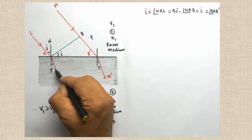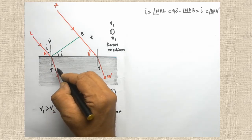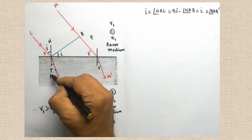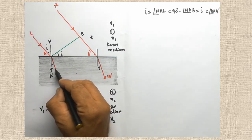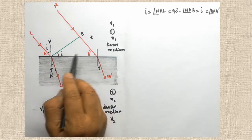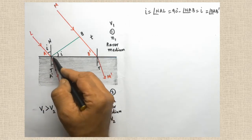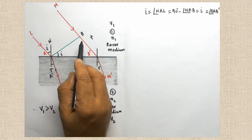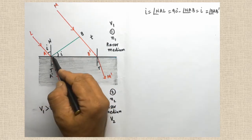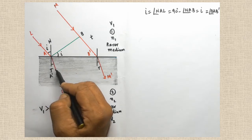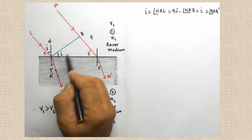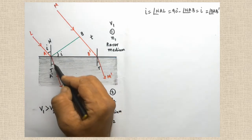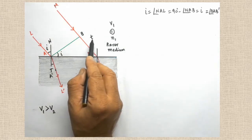The time taken to travel B to B dash and the time taken to travel A to A dash will be the same. Here it travels a longer distance; here it travels a lesser distance. But the time is the same because here velocity is more and here velocity is less — so distance traveled is more in the rarer medium and less in the denser medium.